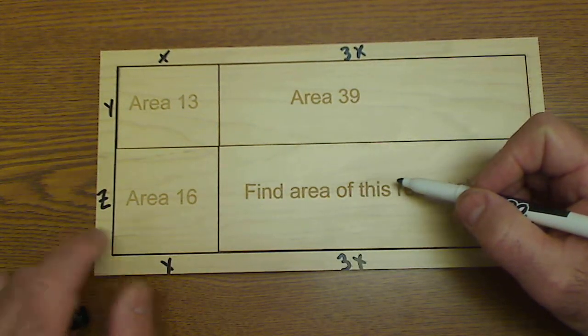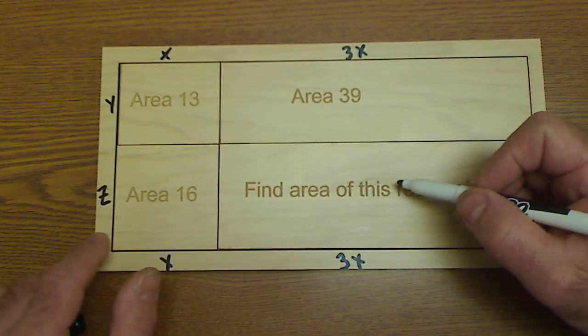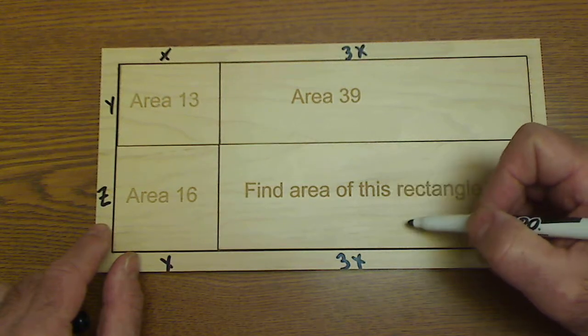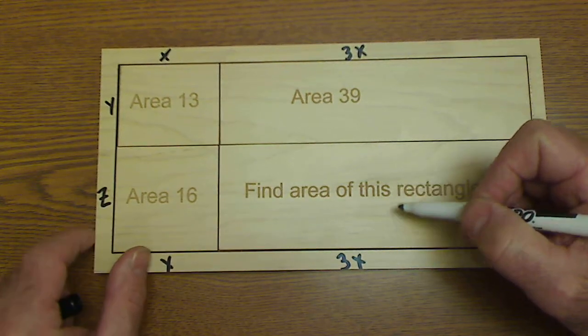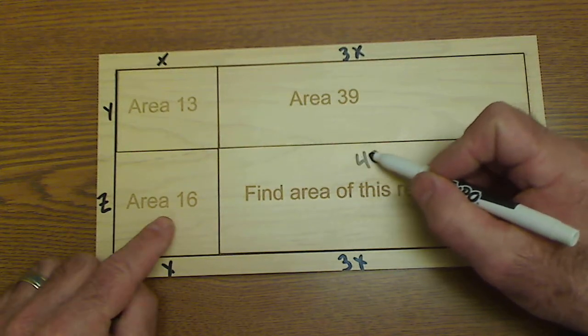Therefore, this area has to be three times larger than this area because the height z is constant, but the base is three times longer. So the area of the rectangle—the answer is three times 16, or 48.